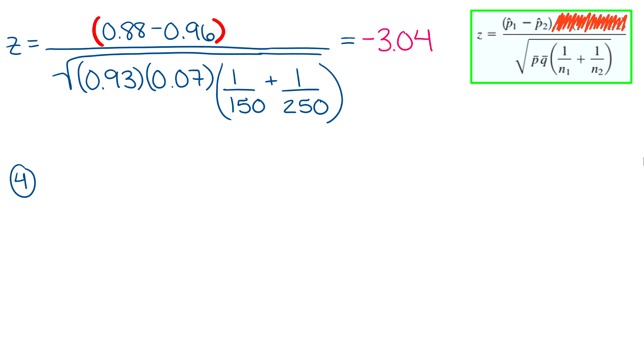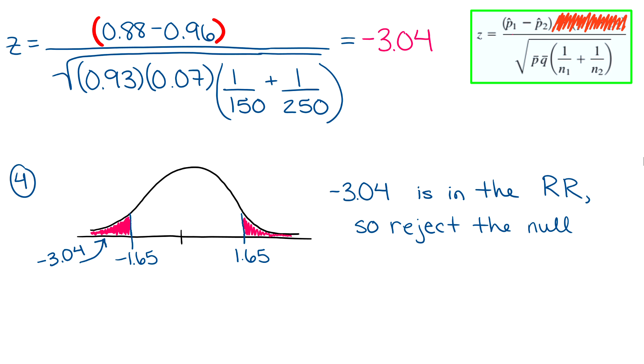Step four. This is where we draw our bell curve, and we put our critical values on it: negative 1.65 and 1.65. We'll shade in the two tails, since this is a two-tailed test. And then we identify where our test value falls. Negative 3.04 definitely falls into that leftmost rejection region, so we will reject the null hypothesis.